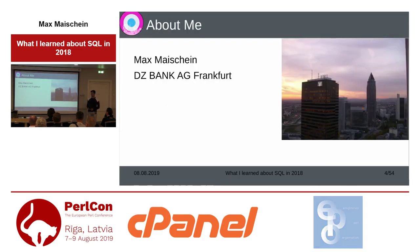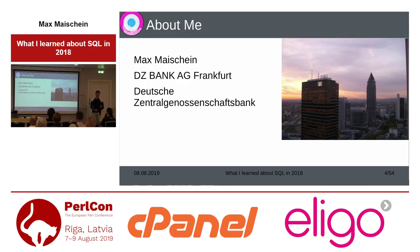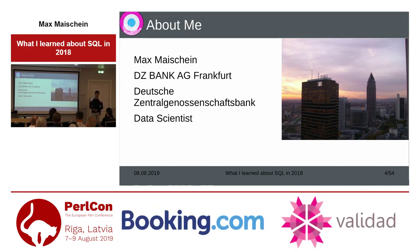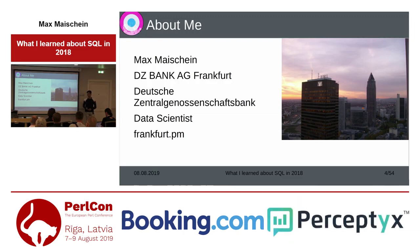My name is Max Meyschein. I work for DZ Bank in Frankfurt — the Deutsche Zentralgenossenschaftsbank. It's the central institute of the cooperative banks in Germany. Most likely you haven't heard of it, but if you have a cooperative bank in Germany, we are the institute behind the Volksbank or Greif Eisenbank. I work there as a data scientist, which means a little bit of programming — some in Perl — and a lot of data managing with SQL, or maybe with Perl or Excel depending on what's needed.